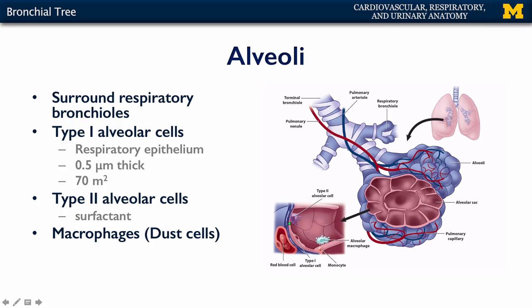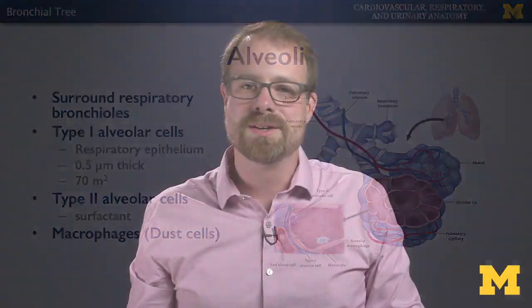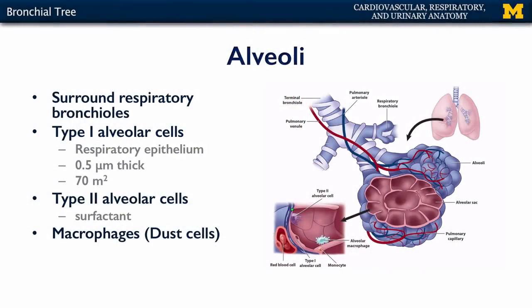The first are type 1 alveolar cells — simple squamous epithelial cells that are very thin, round, and flat, important for the respiratory epithelium and the movement of gases in and out of the body. The second are type 2 alveolar cells — cuboidal epithelium that secrete surfactant, which maintains surface tension of the alveoli so they stay patent and don't collapse. The third cell type is alveolar macrophages, also called dust cells, which phagocytize any material that has made it through the conductive pathway.